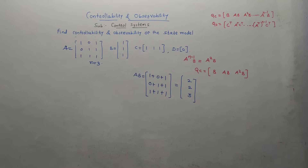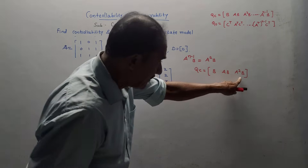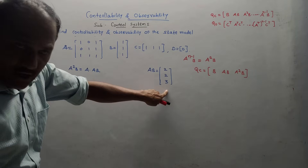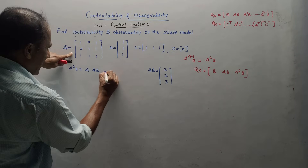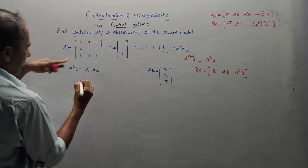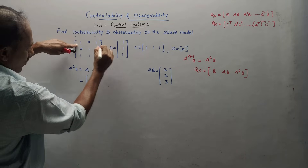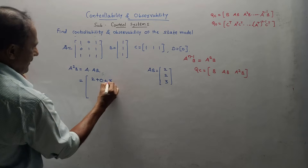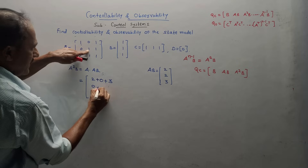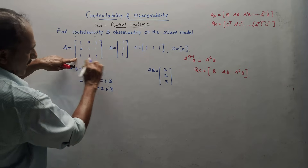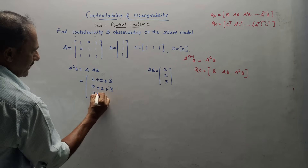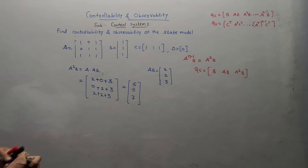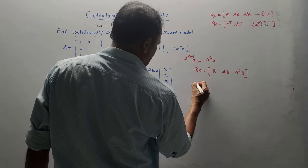Now let us calculate matrix A squared B. A squared B can be written as A into (A into B). We already have AB equals [2; 2; 3] and matrix A. Taking the multiplication: first row of A into AB gives 1 into 2 plus 0 into 2 plus 1 into 3 equals 5. Second row gives 0 into 2 plus 1 into 2 plus 1 into 3 equals 5. Third row — all values 1 — gives 2 plus 2 plus 3 equals 7. So matrix A squared B is [5; 5; 7].